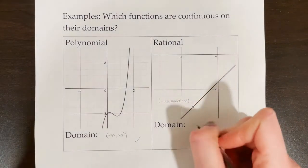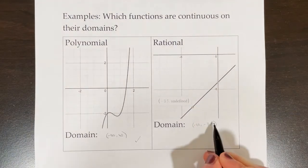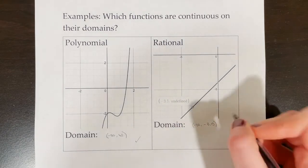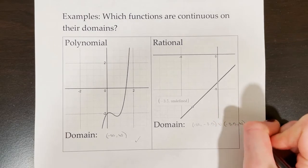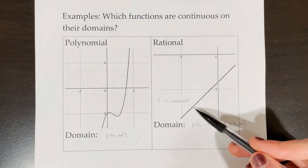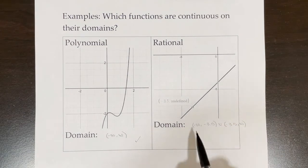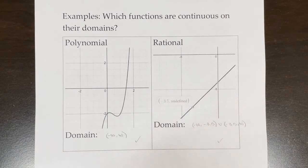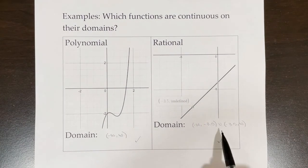For this rational function, the domain is negative infinity to negative 3.5 — using an open parenthesis because the value negative 3.5 is not included — union negative 3.5 to infinity. You might think the function is not continuous because it's not continuous at that one specific point. However, because that point is not included in the domain, the function is continuous at every point on its domain. So even though negative 3.5 is not a defined value, it is not part of the domain.